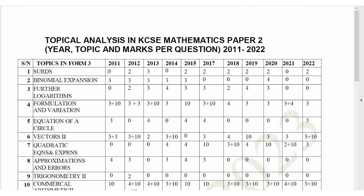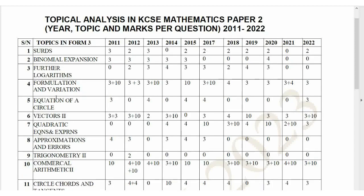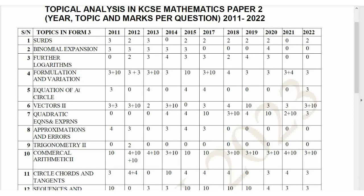Surds have never missed in a Paper 2 Section A question — they are always there, 2 or 3 marks, except in 2021 and 2014. So expect a surds question. Binomial expansion was missing in 2022 and 2021, so expect it this year. Logarithms missed in Section A of Paper 2 recently, so you can also expect that. Formula and variation has never missed — making the subject of a formula has never been absent, so prepare well for it. Equation of a circle is 50-50 — it may come or it may not.